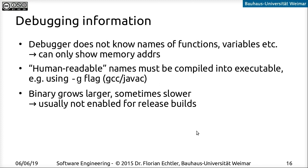Most compilers, both for C and Java, use the -g flag for that. A drawback is that the resulting binary is larger, since it contains additional information not necessary for running the program, and it can sometimes slow things down. Usually, a release build you want to publish is compiled without debug information, also because that information can reveal internal details about your program that you may not want others to know.